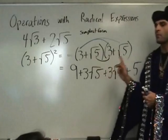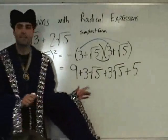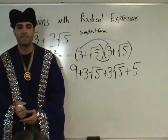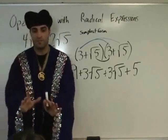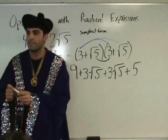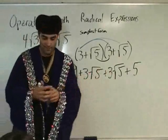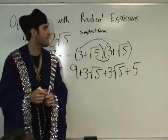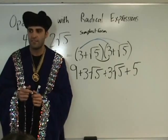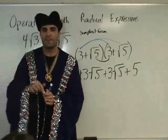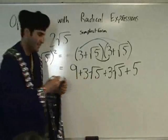Combining — remember what we did at the beginning. What can combine here? The two middle terms combined. The O and the I combine. So what do these two make? Combine like terms — it's addition, so it would be six root five. Six root five.